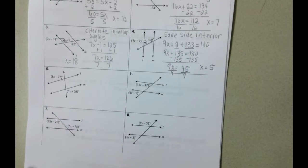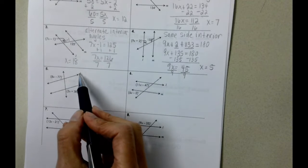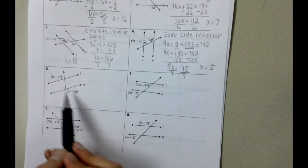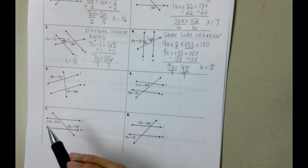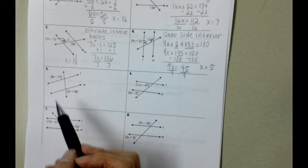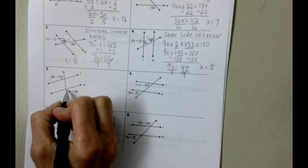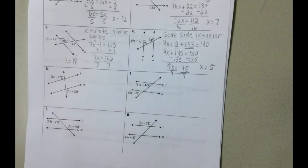Problem number 5. Remember, lines L and M are parallel. We want to identify what kind of angles we're working with, as well as solve for X. We see the 8X minus 77 is here. The 3X plus 38 is here.